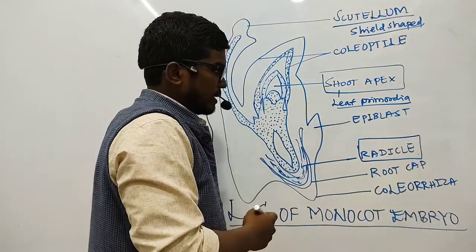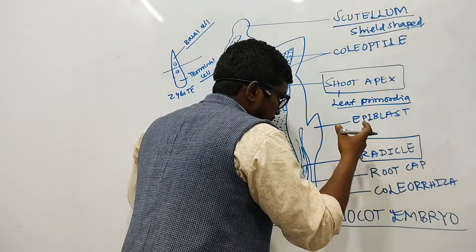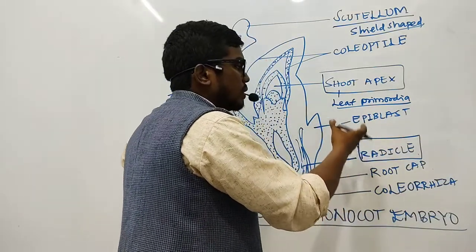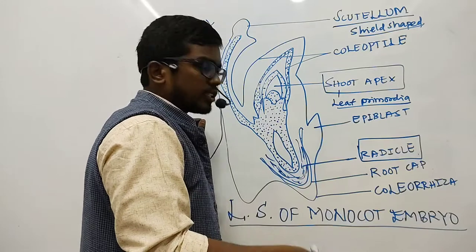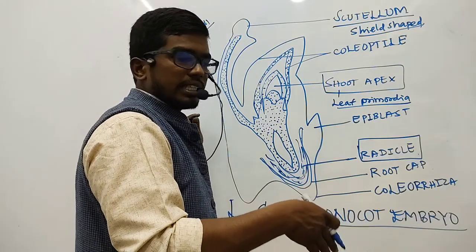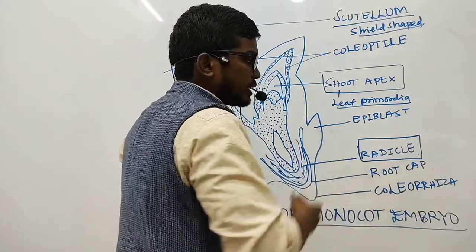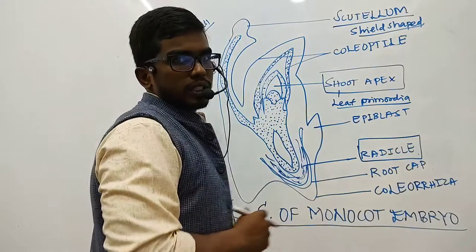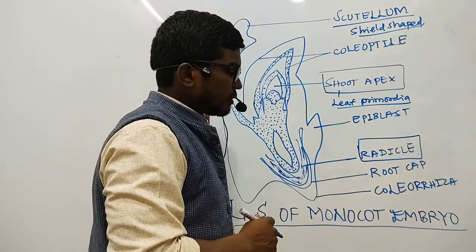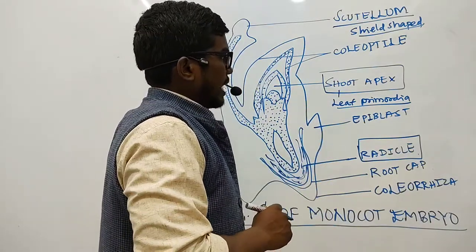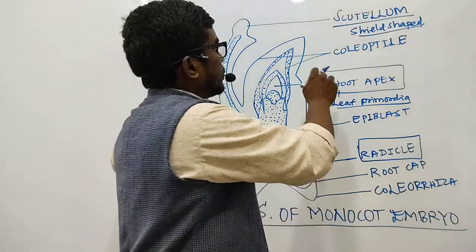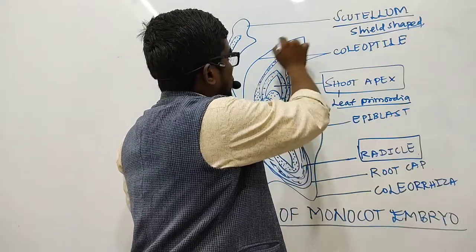Later we have the radicle part, which goes positively geotropic in the soil during germination, and it helps in the formation of the first root from the embryo. Remember that point. Further, let me tell you that the shoot apex is enclosed by or covered by a structure called coleoptile.